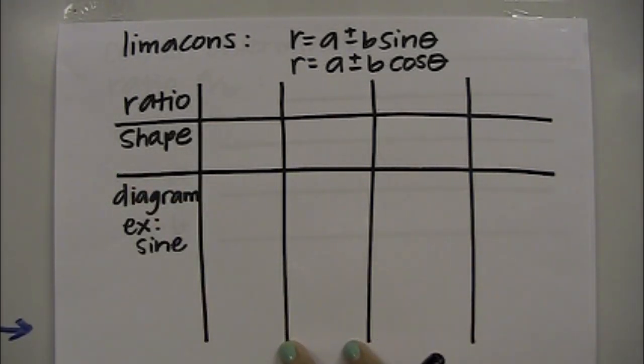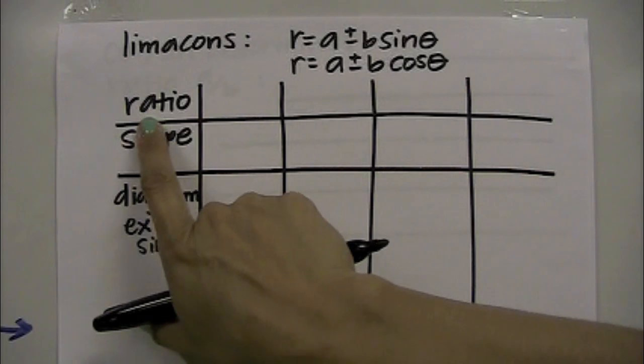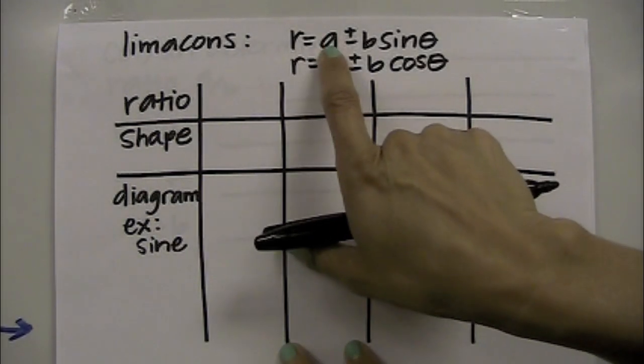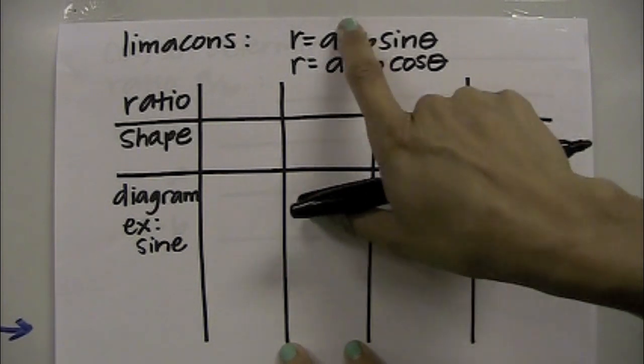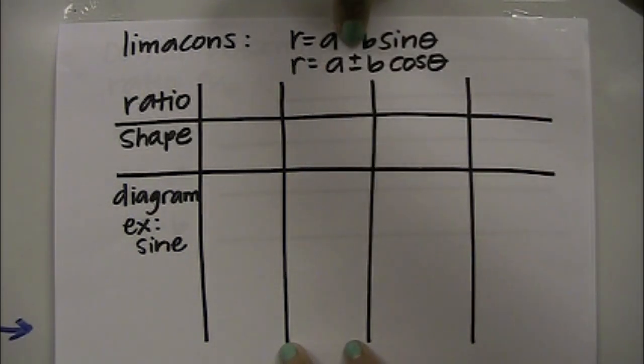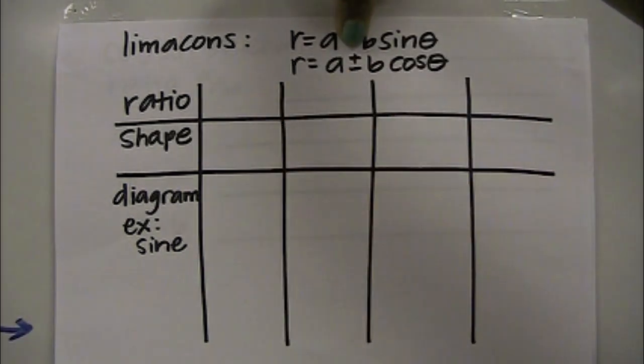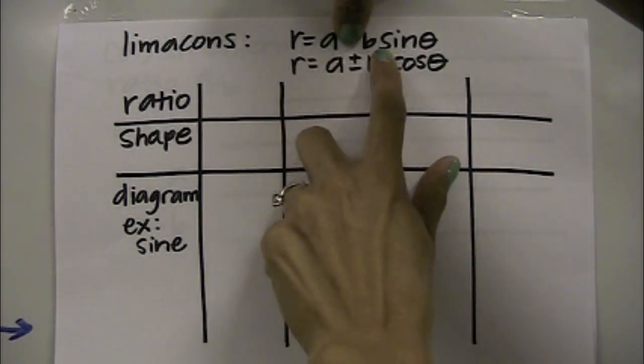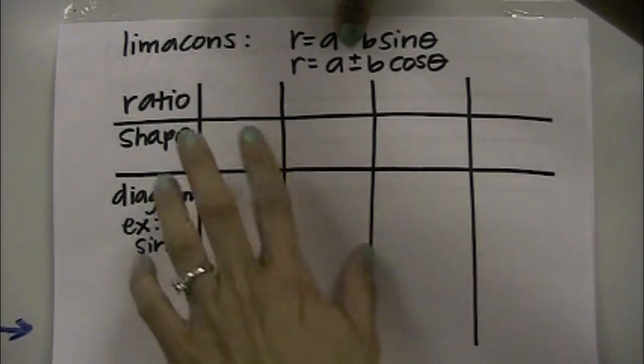We're going to fill out this chart to help us identify what the graph will look like, the general idea before we even have to start graphing them. When I say ratio, it's the ratio of a over b, so you'll identify your a value and your b value, disregarding the signs. It's almost like you can cover this up and look at the two numbers to get your ratio, disregarding the signs.